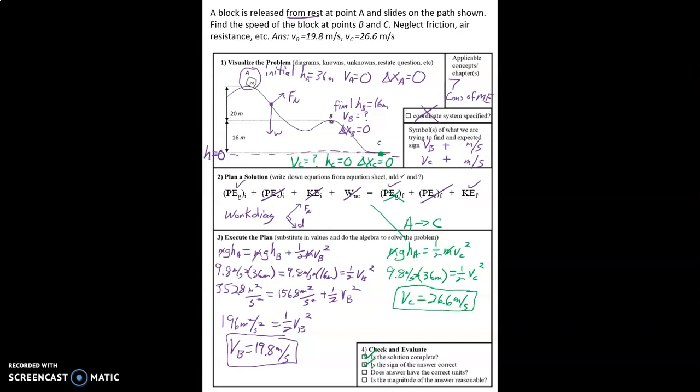We did get positive answers for our speed. Speed is a scalar, magnitude only. We did pay attention to our units. Remember here where we looked at meters per second squared times meters. Got meters squared per second squared. Took the square root to get meters per second. So the units made sense.